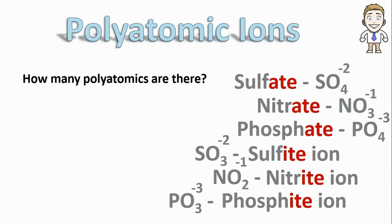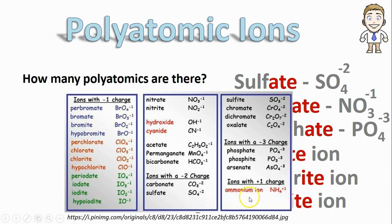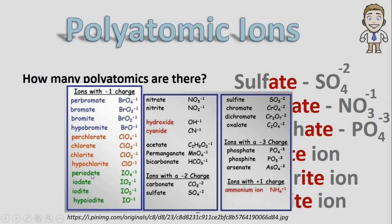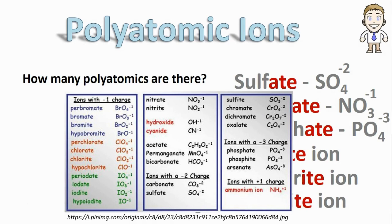We'll wrap up the video by answering the question, how many polyatomic ions are there? We've talked about six so far, but in the real world there's tons of these things. Most chemistry teachers will provide you with a table like this that lists a whole bunch of polyatomic ions with their charges and their names that you can use as a reference. If you don't have one, you can always quickly do a Google search and find one to use on your own.